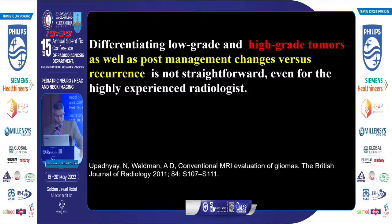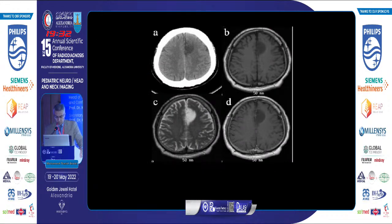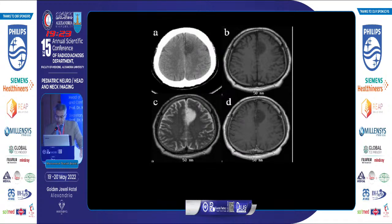Distinguishing post-radiation necrosis from tumor recurrence is not straightforward even for the most highly experienced neuroradiologist. A patient with a left frontal lobe hypodense lesion on CT showed hypo-intense signal on T1, hyper-intense on T2, without significant post-contrast enhancement. From the conventional MRI, the lesion appeared to be non-invasive, but the final diagnosis was glioblastoma.